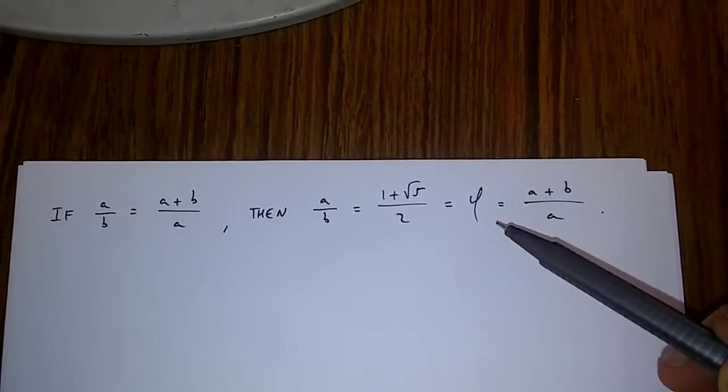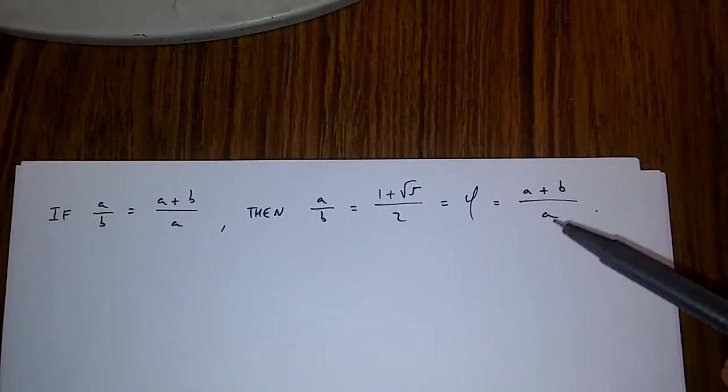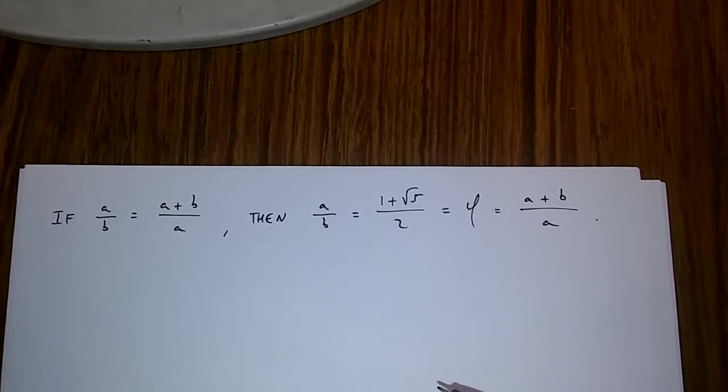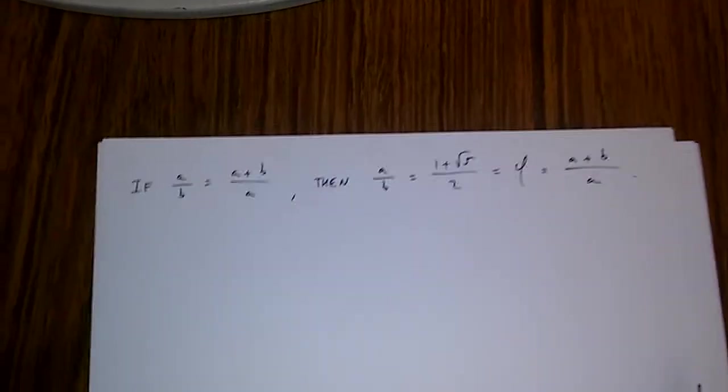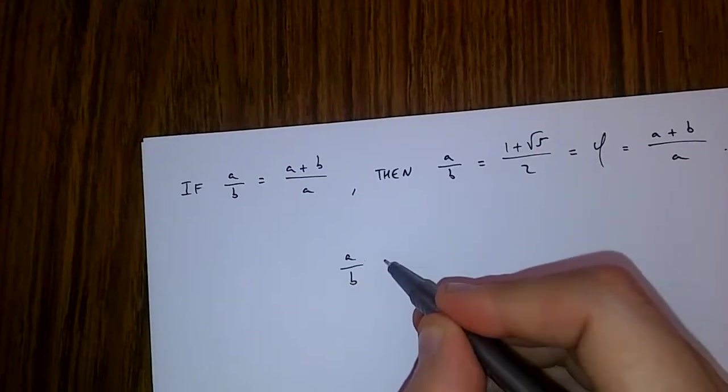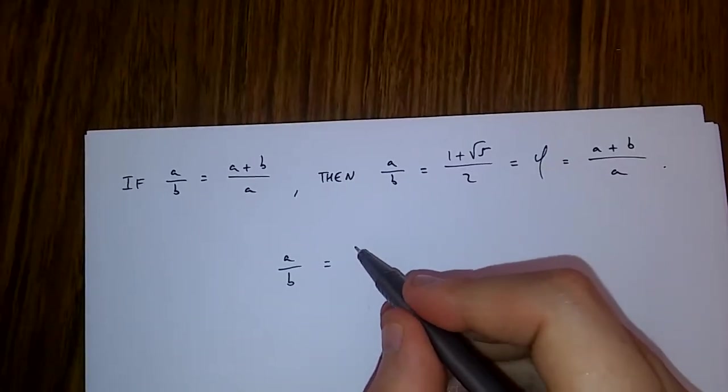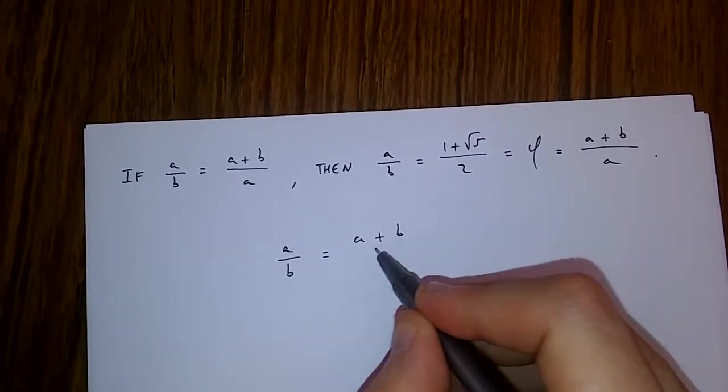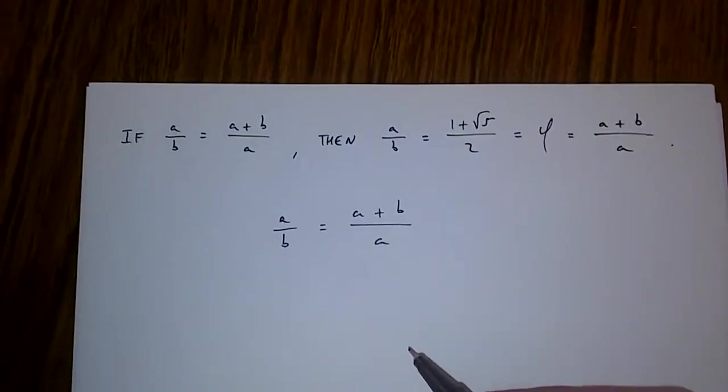This is equal to the golden ratio, which equals (a+b)/a. Now to prove this, I first have to say that a/b = (a+b)/a.